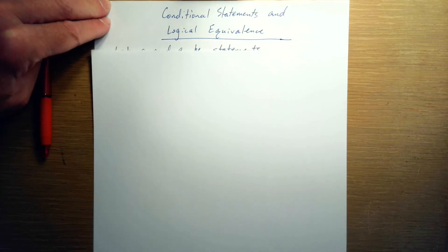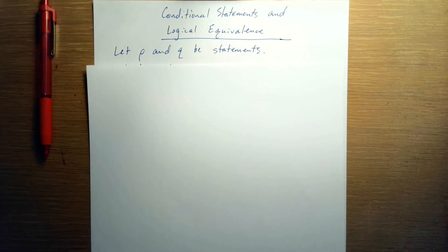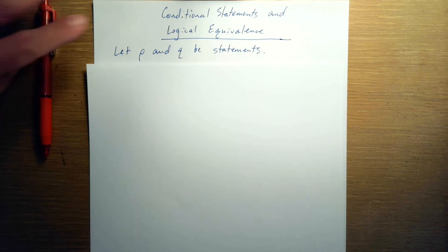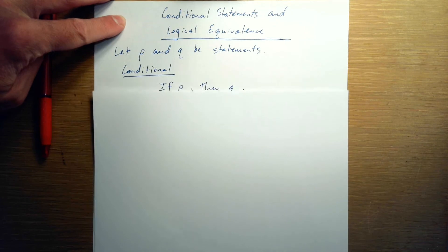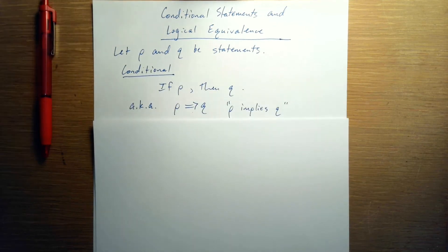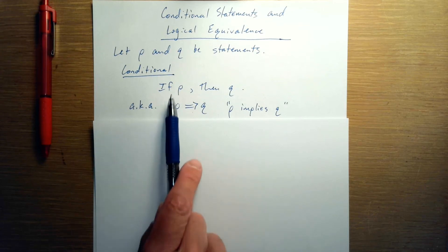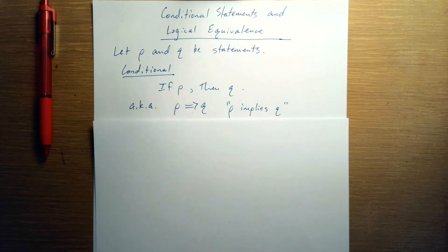So first of all, we need a couple of statements. Let P and Q be statements. They can be any statements. And these two things will be the ingredients for what we call the conditional statement. So here is what the conditional statement is in terms of how we say it. We could say, if P then Q, that's considered a conditional statement.